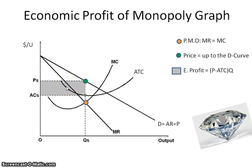In the short run, a monopoly could earn economic profit or suffer economic loss. The only time it would really suffer a loss is usually when it's trying to keep competitors out. What it'll do is something illegal called price fixing — lowering its price below what it should be in the market so it's too low for others to compete. Obviously, they wouldn't set a price lower than AVC, because that's the shutdown point. As long as the price is above AVC, they will operate in the short run.